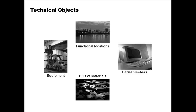Technical objects are important things in plant maintenance. They are basically objects that require maintenance — they are installed in plants and require maintenance. Technical objects could be equipment, such as a forklift, or they could be serial numbers.